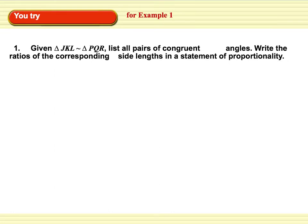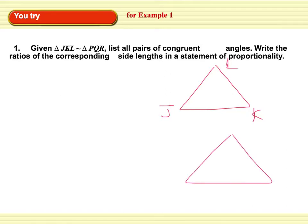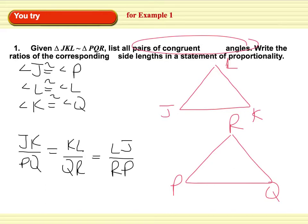Try this one. Given triangle JKL is similar to triangle PQR, list all the pairs of congruent angles, and write the ratios of the corresponding side lengths in a statement of proportionality. If you need to draw the triangles first, that's fine. When you write your pairs of congruent angles, make sure you do so in the correct order. Go ahead and pause and try this on your own.